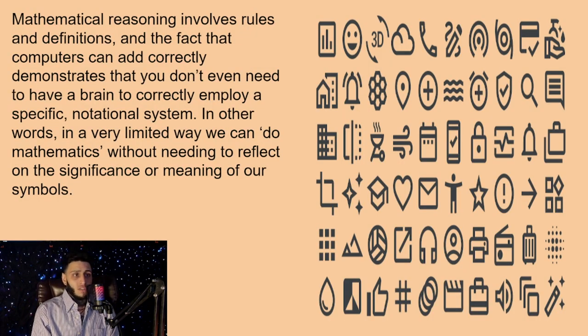Mathematical reasoning involves rules and definitions, and the fact that computers can add correctly demonstrates that you don't even need to have a brain to correctly employ a specific notational system. In other words, in a very limited way, we can do mathematics without needing to reflect on the significance or meaning of our symbols.